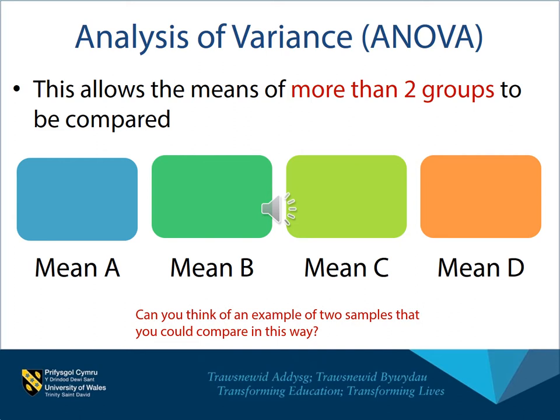Another important statistical test is analysis of variance, often abbreviated to ANOVA. This can be thought of as an extension of a T-test. Whereas a T-test compares the means of two groups, ANOVA can be used to compare the means of more than two groups — it could be three, four, five, or whatever. So instead of just comparing Vauxhalls and Fords, you could be comparing Vauxhalls, Fords, Volkswagens, and more. Again, it's the software that does all the calculation and produces a probability, and we decide whether that gives us significance or not.